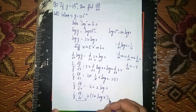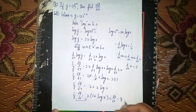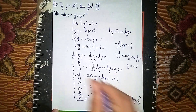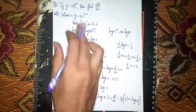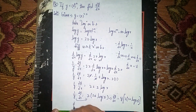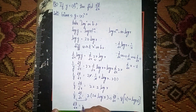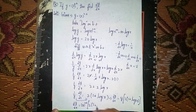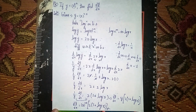So dy by dx equals y into 2 into (1 plus log x). Replacing y with its given value x power 2x, our final answer is: dy by dx equals x power 2x into 2(1 plus log x). Thanks for watching.